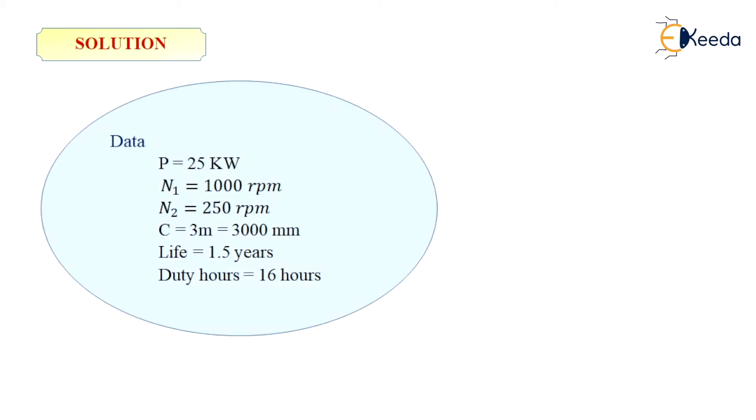So let's write down the data. P is equal to 25 kW. N1 is 1000 rpm. N2 is 250 rpm. C that is centre to centre distance is 3m, that is 3000 mm. Life is given as 1.5 years. And duty hours are 16 hours.